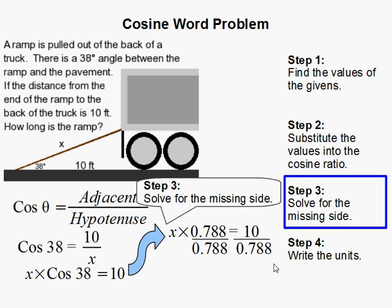And then we divide both sides by 0.788 to get rid of this, because remember, we're solving for x, so we want to get x by itself. And that gives you about 12.69.